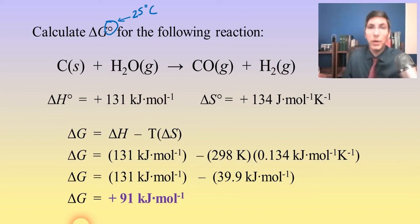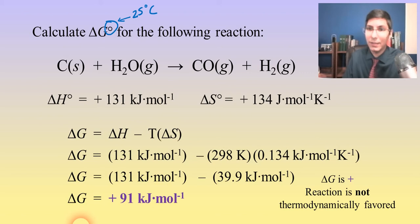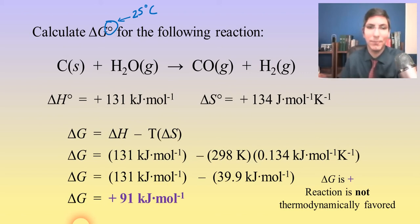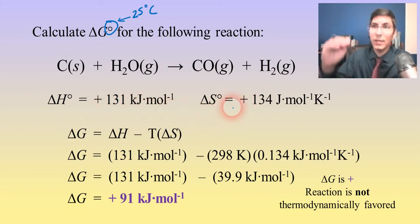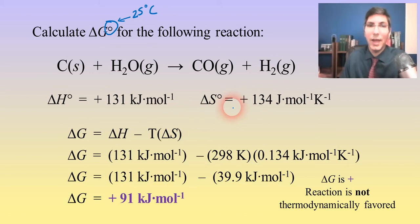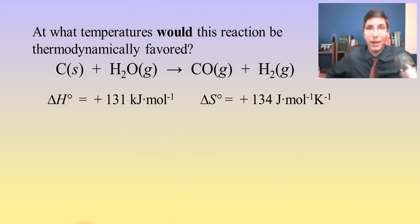So is this going to be a thermodynamically favored process at 25 degrees Celsius? It's not. If delta G is positive, it is not a TFP. But as we learned in the last video, both delta H and delta S are positive, which means this reaction is going to be thermodynamically favored at relatively high temperatures.